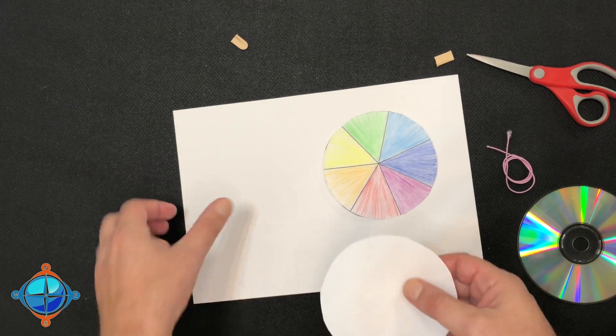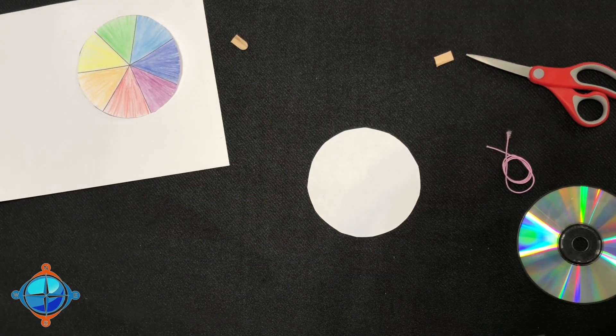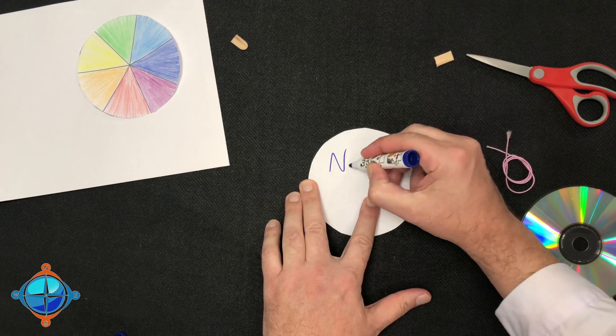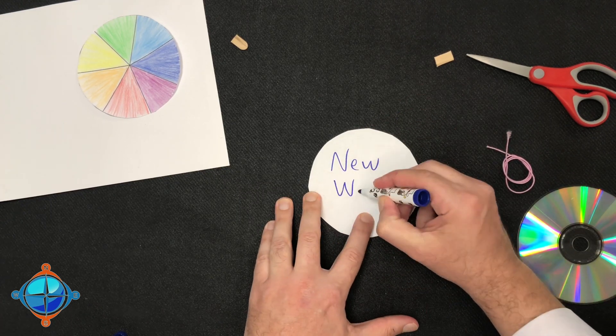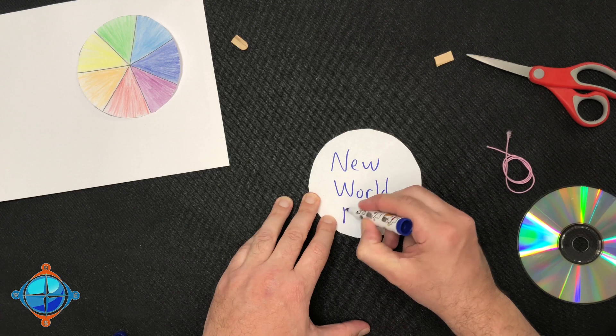I'm going to flip this over. Take away the cardboard. I'm not going to color but I'm going to write New World English.